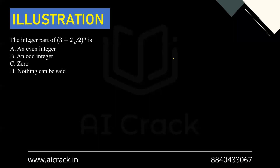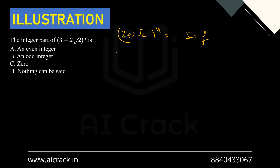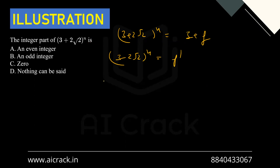Any number can be written as an integral part I plus a fractional part f. So let (3+2√2)^n = I + f. Now consider (3-2√2): since 3 - 2.828 ≈ 0.172, which is a fractional quantity between 0 and 1, raising it to the power n also gives a small fraction. Let's call that f'.